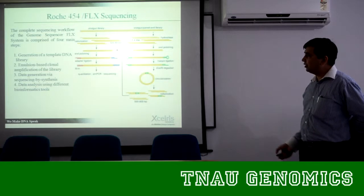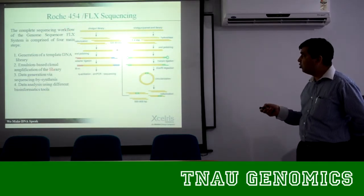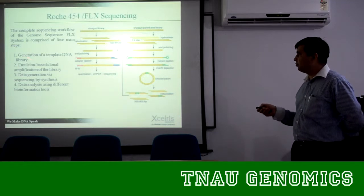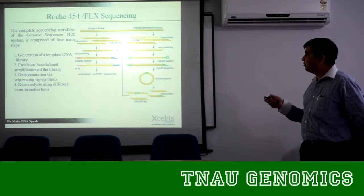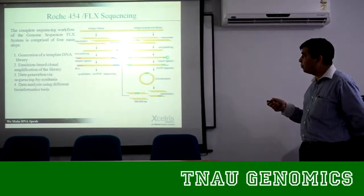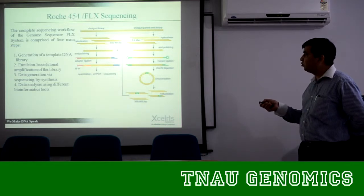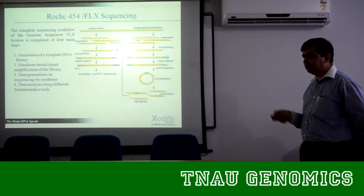I am going to show you what data is required. The first very simplest part: you have your genomic DNA, you make your template library first. In making the template library, you take either a shotgun approach or a paired-end approach. In the shotgun approach, you take the genomic DNA and fragment it into 500 to 800 base pairs, polish that, fill in the gaps, then do emPCR, and then this library is ready.